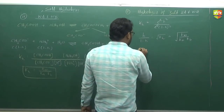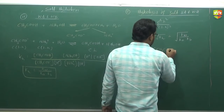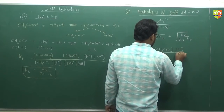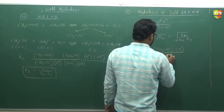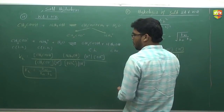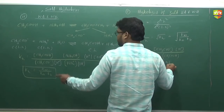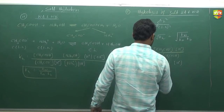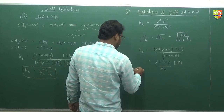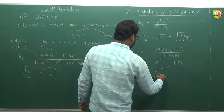The concentration of H⁺ is what? Ka equals... Can we neglect (1 minus h)? The H⁺ concentration is Ka times h divided by (1 minus h). So h/(1−h) you can directly substitute as root over of Kw divided by Ka times Kb.